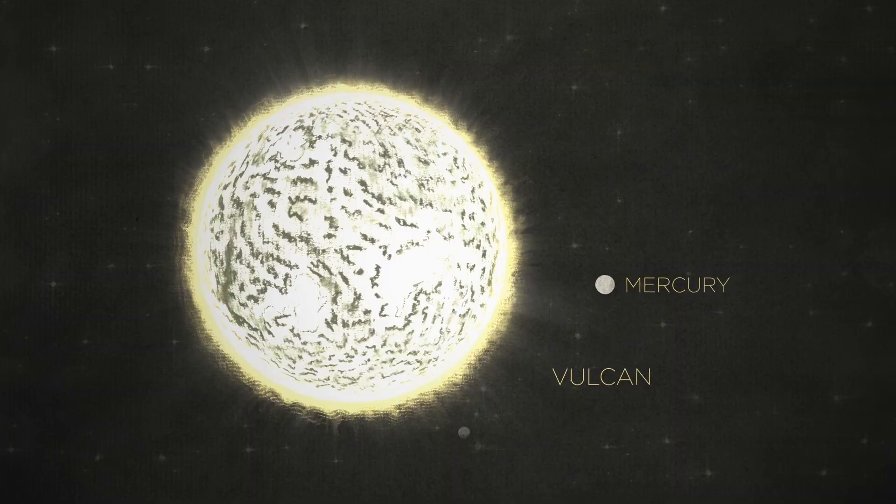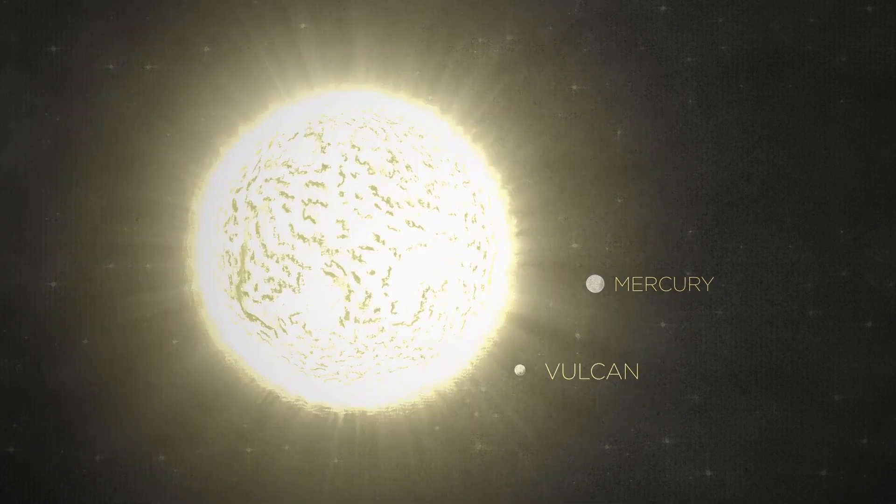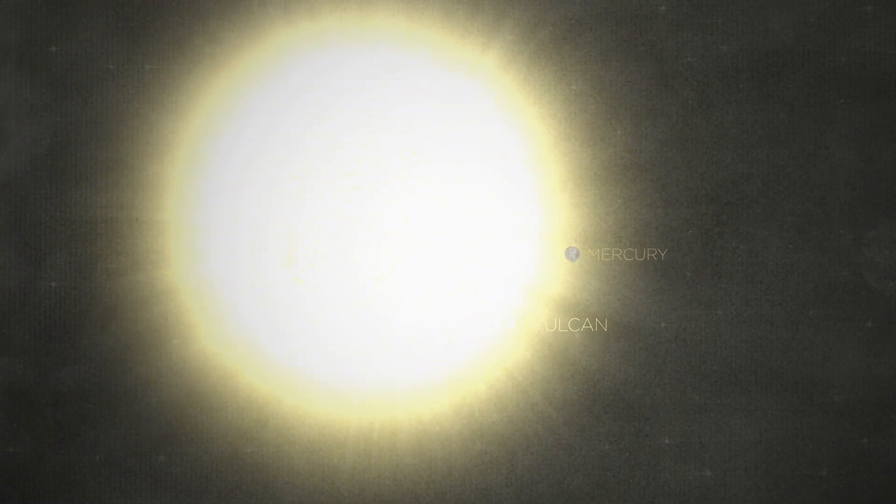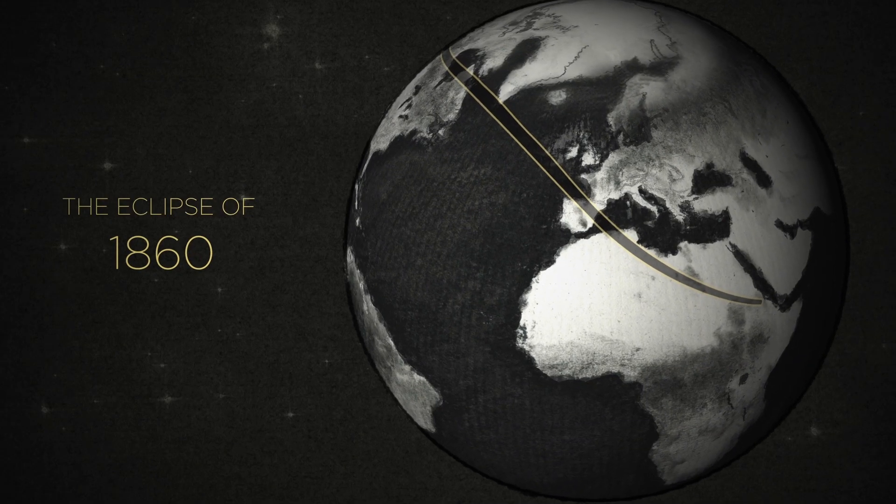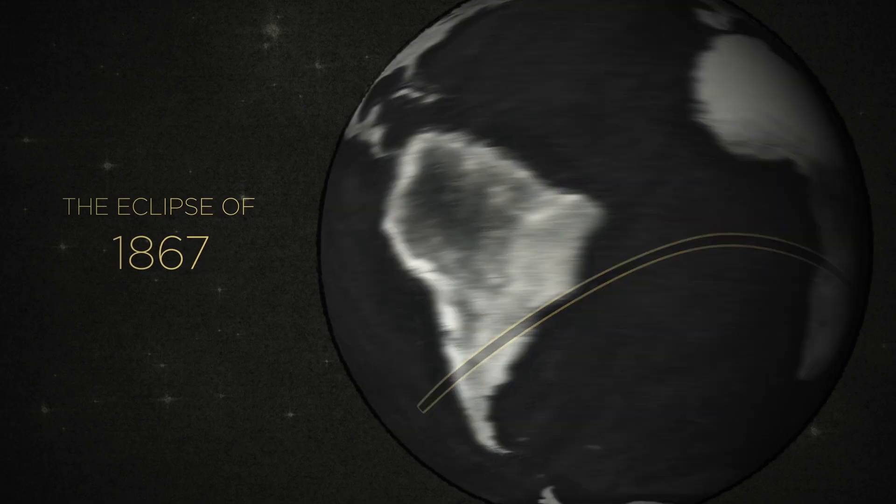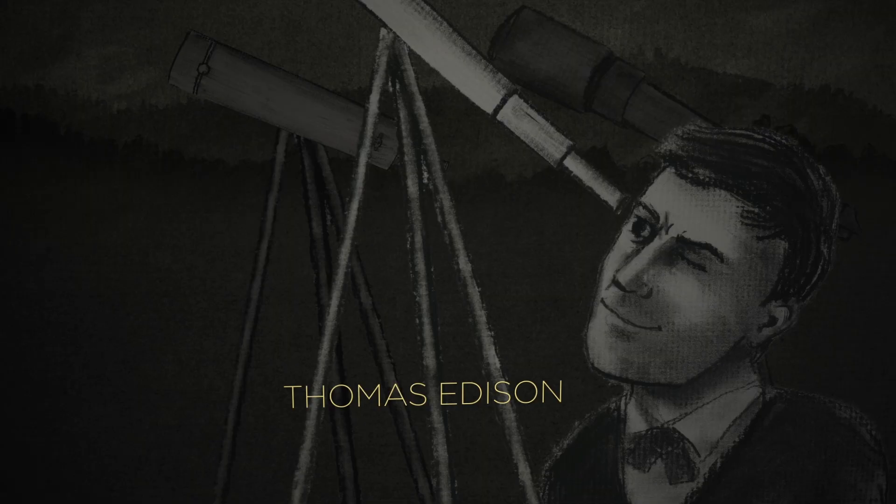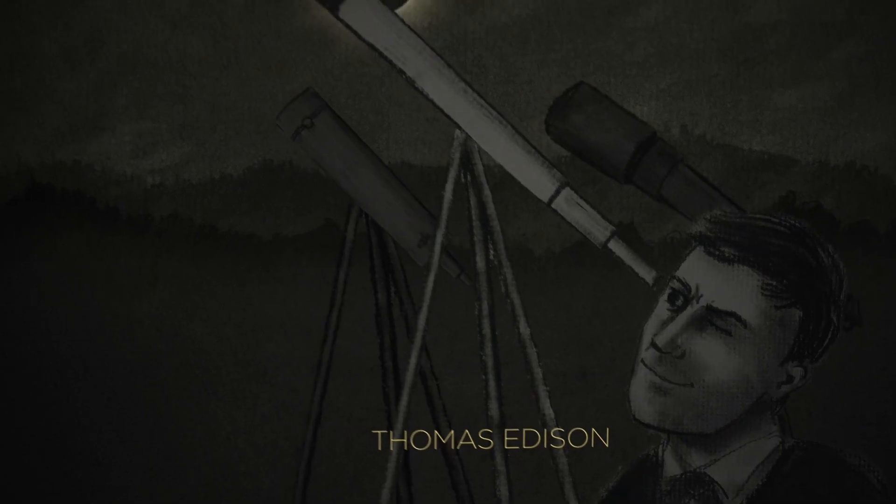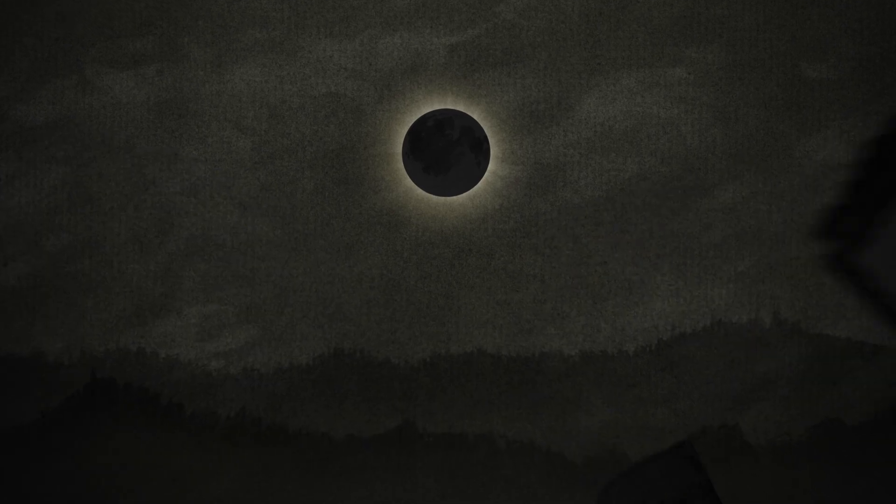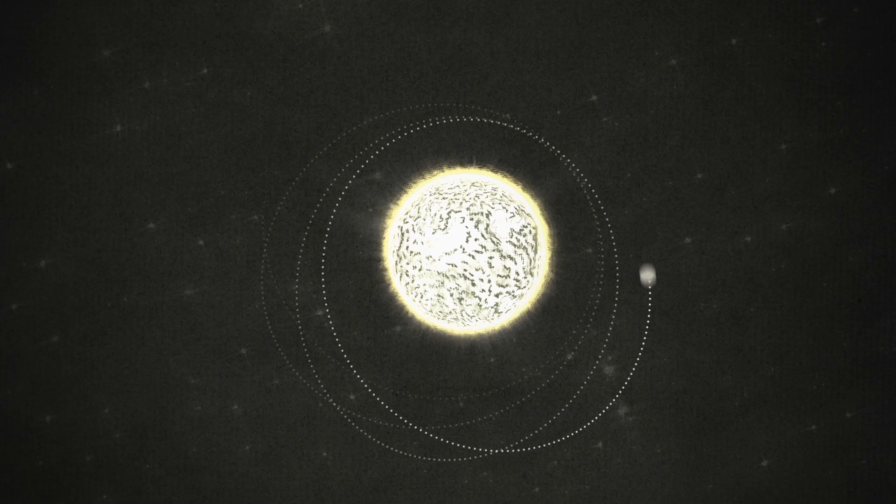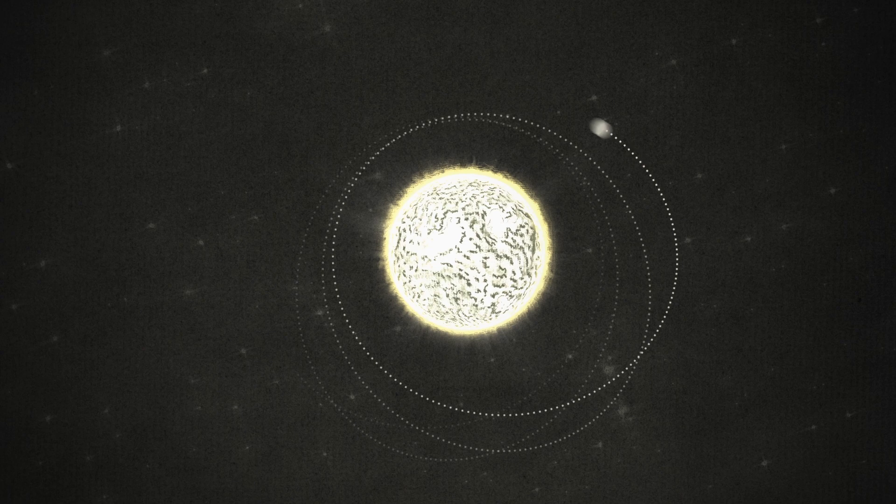But here's the problem. Vulcan was supposed to be right here, just hidden by the sun's glare. Vulcan hunters would need an eclipse. Every time one rolled around, scientists, including Thomas Edison, scoured the sky. But those eclipses never revealed Vulcan. It just wasn't there. Mercury's wobbly orbit remained a mystery until Albert Einstein came along.